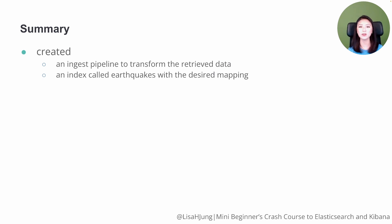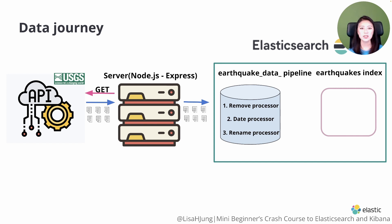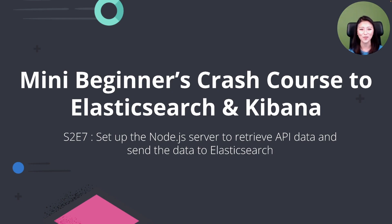In this episode, we created an Ingest Pipeline to transform the retrieved data. We also created an index called Earthquakes with the desired mapping so the transformed data could be indexed there. In the next episode, we'll set up our server to retrieve the data from the USGS API and send the data to the Elasticsearch Earthquake Data Pipeline. Once the data is transformed, it will be ingested into the Earthquakes index. Thank you for watching and I'll see you in the next episode.